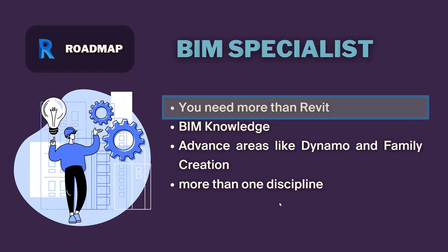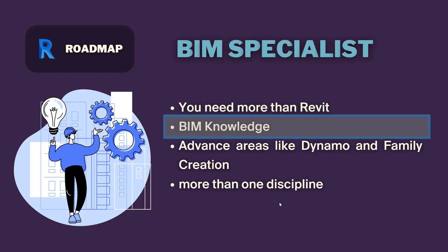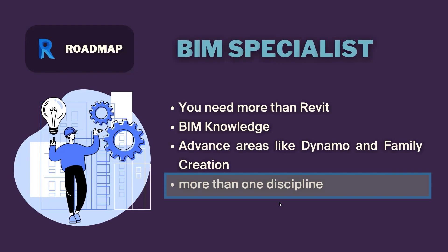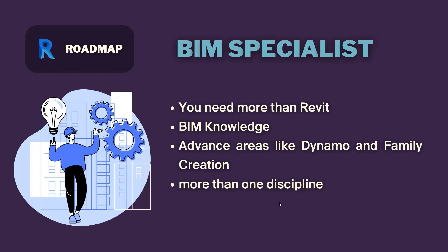But if you want to be a BIM specialist, you need more than Revit — you need to know some other software like Navisworks, and you need to have a good knowledge of BIM processes and BIM terms. After that, to proceed in your career you need to know some advanced areas like Dynamo and family creation too. It's a plus to know more than one discipline — for example, knowing architectural and structural together, or even architectural, structural, and MEP all together. You will be a BIM hero and can proceed in your work much faster.